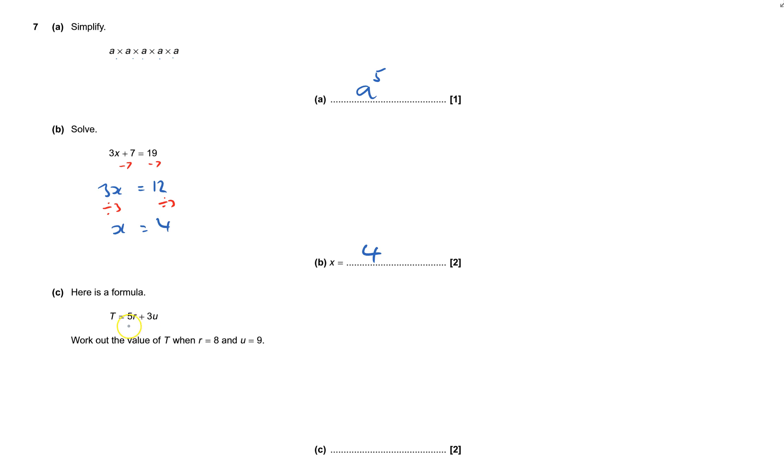Now, formula of t equals 5 r's plus 3 u's. You've got to find the value of t when r is 8, so it's got to 5 8's, and I'll write that down, 5 8's, plus 3 u's, and u's 9.